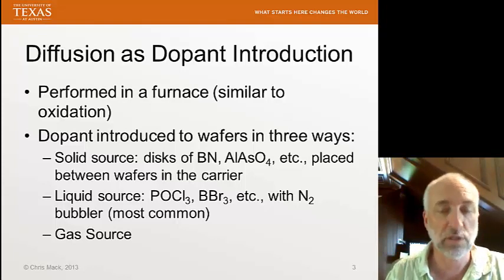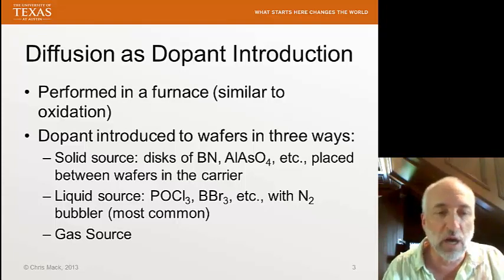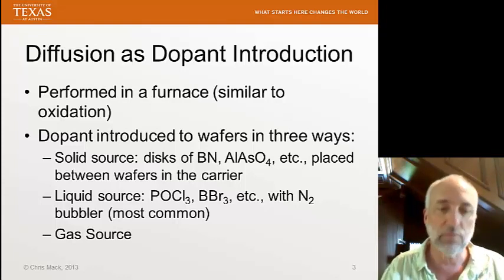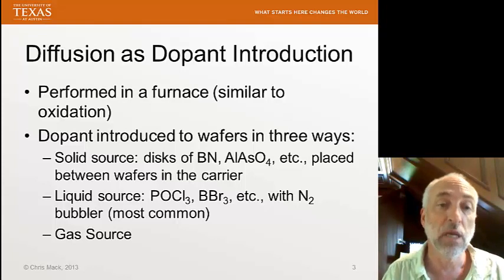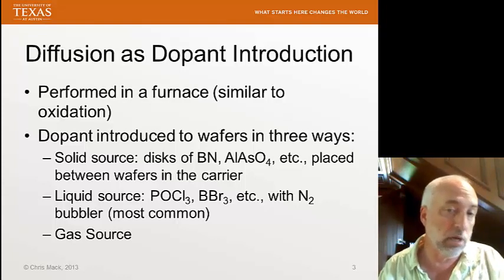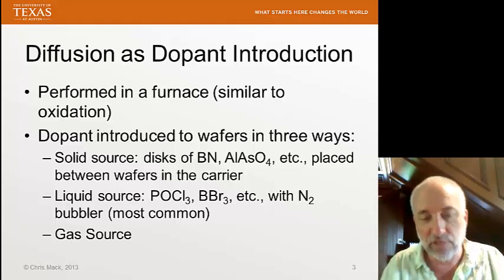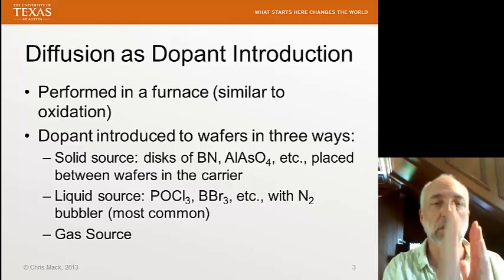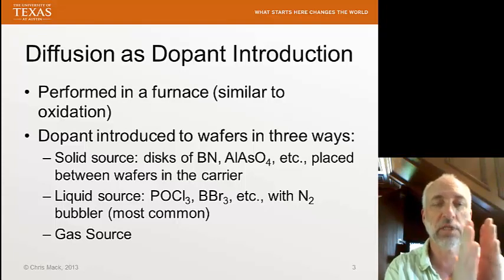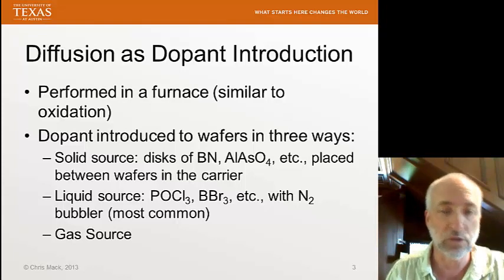We could use a solid source. We stack all the wafers up in a carrier — wafer, wafer, wafer, all next to each other, 25, 50, 100 wafers at a time. What we do with a solid source is take a disk of some dopant material, for example boron nitrate (BN), and put that disk right next to the wafer. So you've got the source of boron sitting right next to the wafer, and you alternate wafers and these disks of solid dopant sources in the carrier.